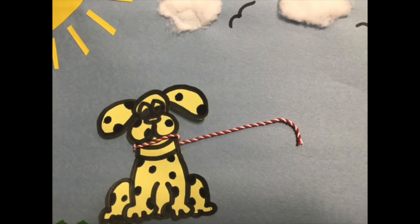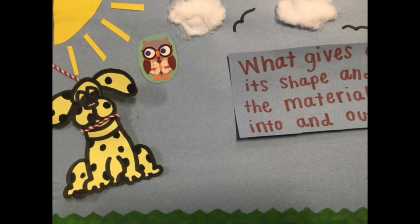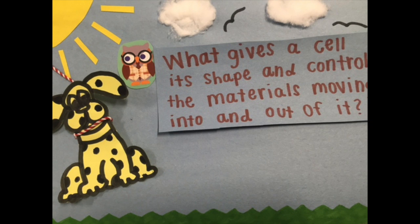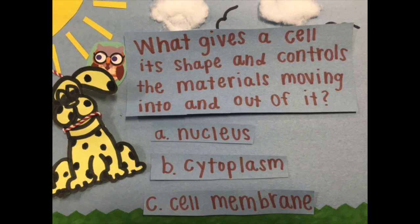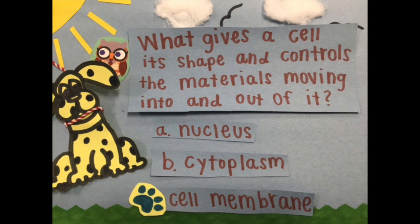Now let's do some review questions. What gives a cell its shape and controls the materials moving into and out of it? Oh, you got it. The cell membrane.